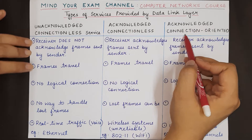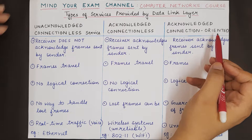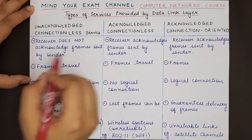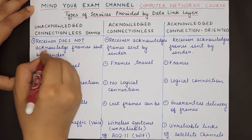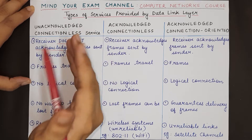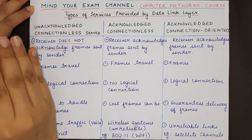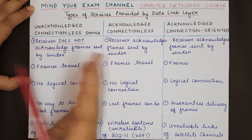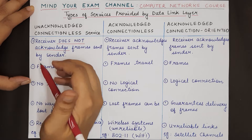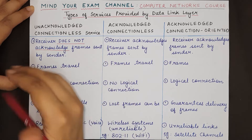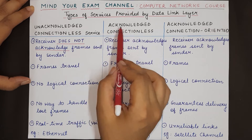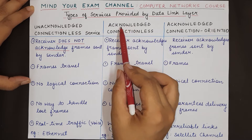In unacknowledged connectionless service, the receiver does not acknowledge the frames sent by the sender — that is why we call it unacknowledged. The sender will send the data, but the receiver will not send any information back to the sender about what frames it has received or not received.